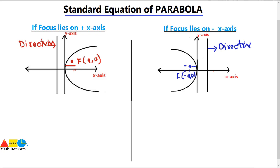First we will discuss the two types — focus on the positive x-axis and the negative x-axis — and then we will see focus on the positive y-axis and negative y-axis. Keep in mind that this equation of parabola is valid only if the vertex of the parabola is on the origin, that is the vertex is (0, 0).